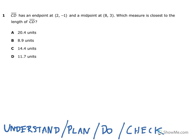This is the Texas STAR geometry test, the released questions from 2013. This is question number one. It says line segment CD has an endpoint of (2, -1) and a midpoint of (8, 3). Which measure is closest to the length of CD?